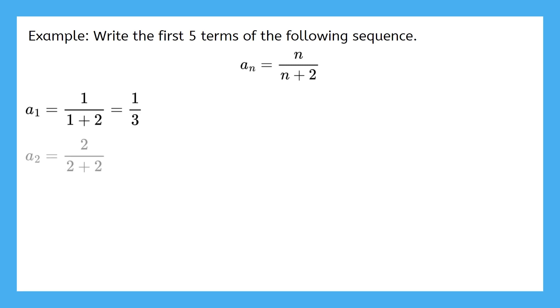Try pausing the video and see if you can find a2. When we substitute 2 for n, we get 2 over 2 plus 2, which is 2 over 4. Wait, what? My answer isn't simplified? Well, I guess that can happen, so we get one-half. Alright, we're doing great. Can you find the next three terms? Pause the video and give it a try.